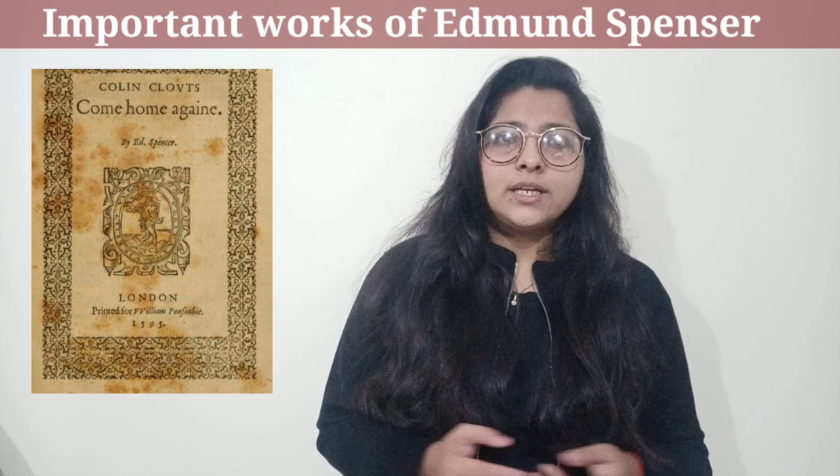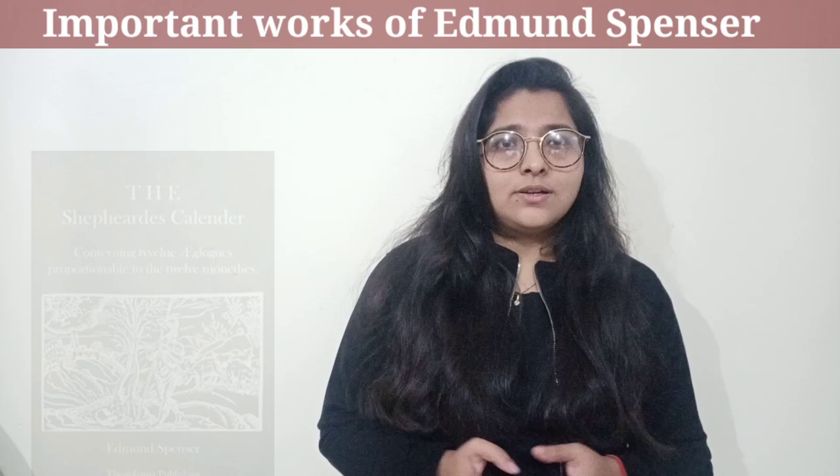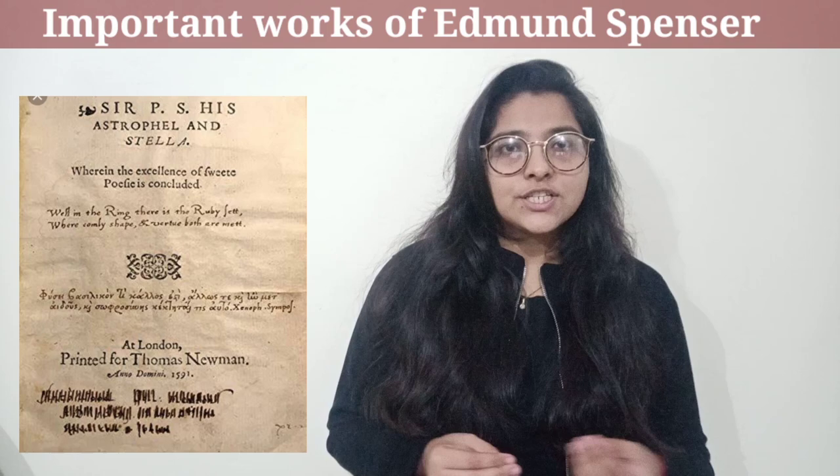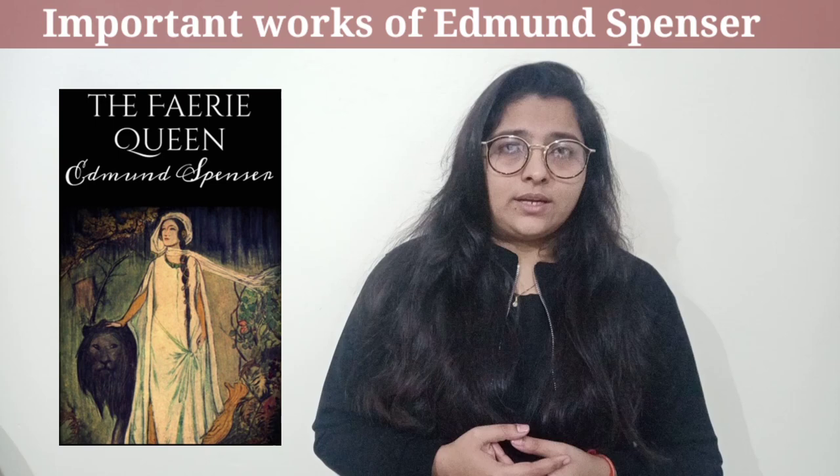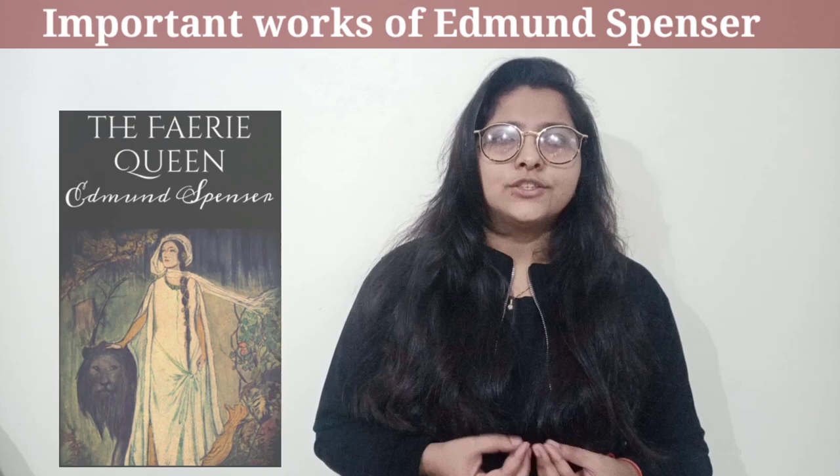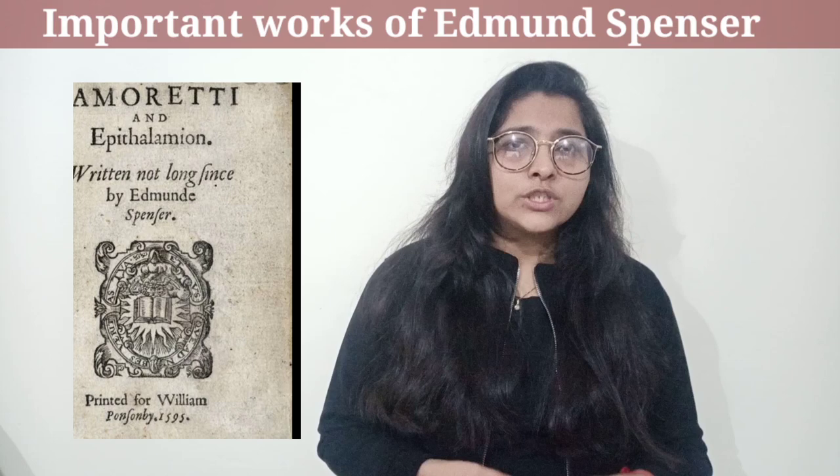Some of the important works of Edmund Spenser include: first, 'Colin Clout Come Home Again'; second, 'The Shepherd's Calendar'; third, 'Astrophel,' which is an elegy dedicated to the contemporary poet Philip Sidney; next, 'Fairy Queen,' an allegoric poem and one of the most important works of English literature; and last but not the least, 'Amoretti,' in which today's poem 'Like as a Huntsman' is published.